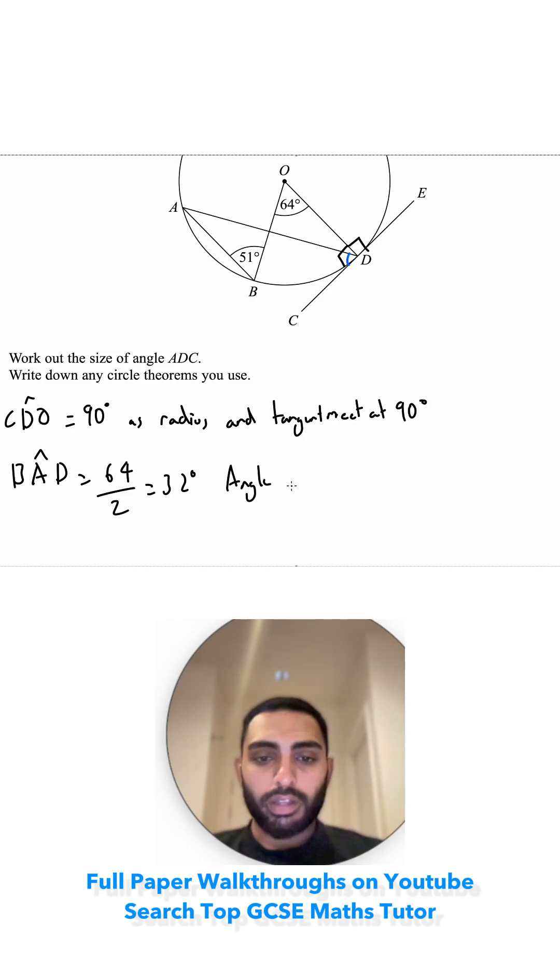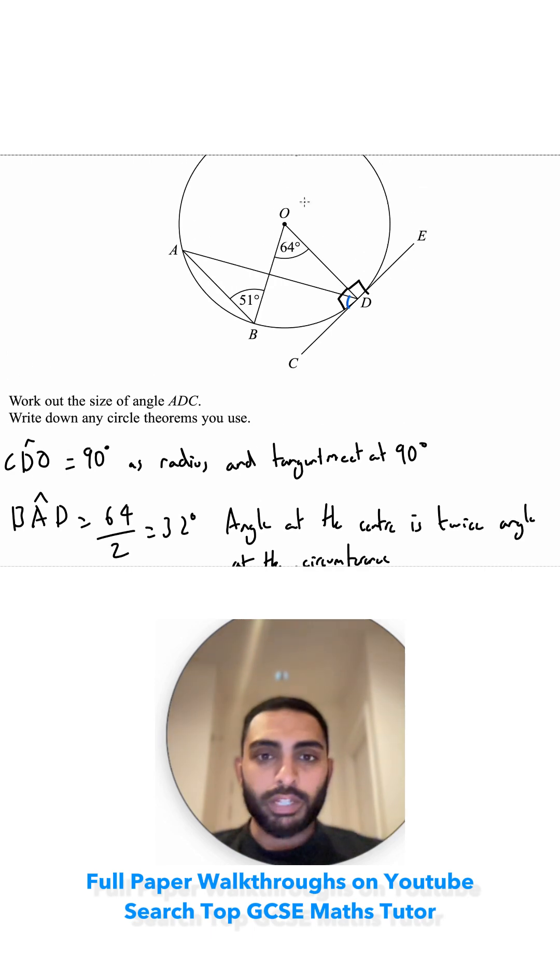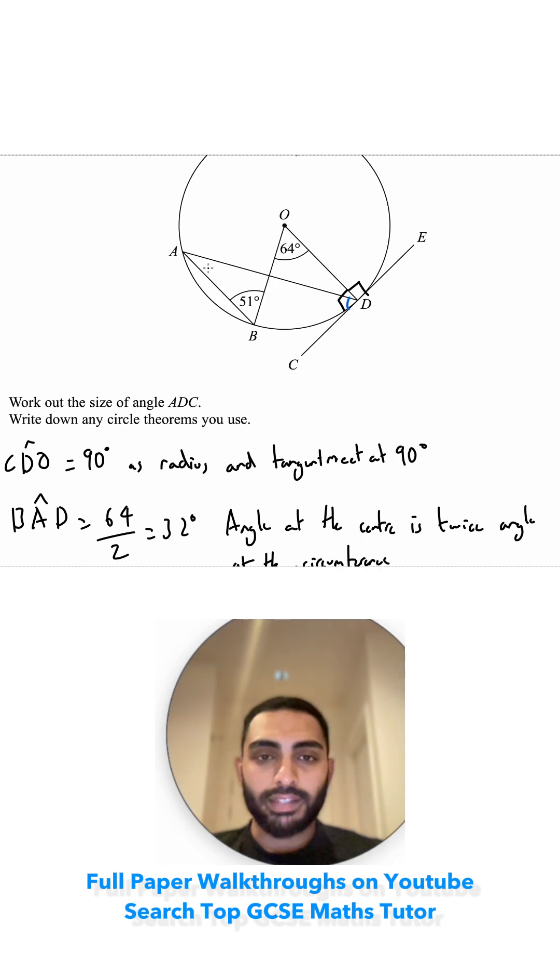So angle at the centre is twice the angle at the circumference. And an easy way to remember it is if you think about the population of the city, a population will be more in the centre of the city than at the edge. So let's label that one on as 32.